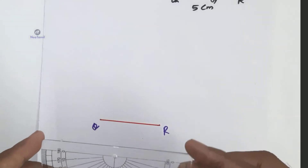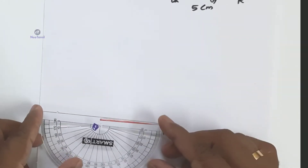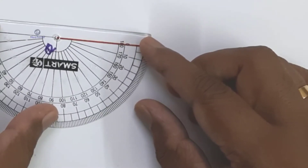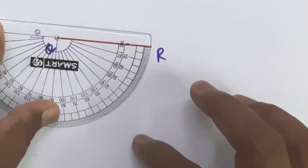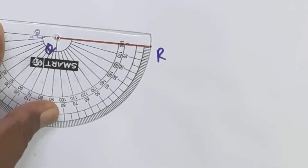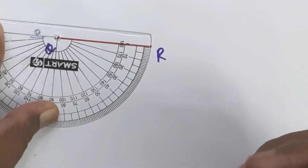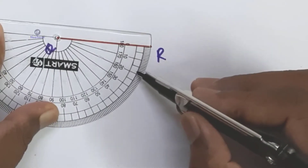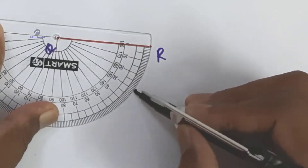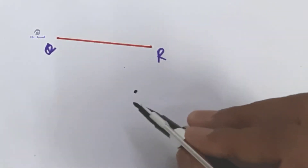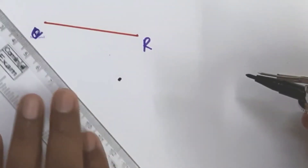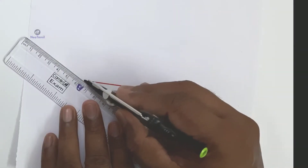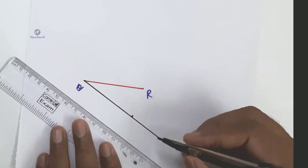We are going to draw a ray QE at Q. Draw angle RQE equal to 30 degrees — draw a 30 degree acute angle. Zero degrees, 10 degrees, 20 degrees, 30 degrees — it is an acute angle. The ray QE is now complete.